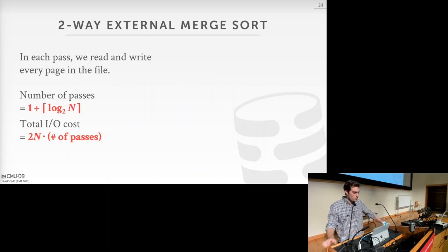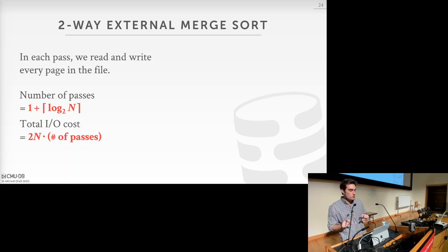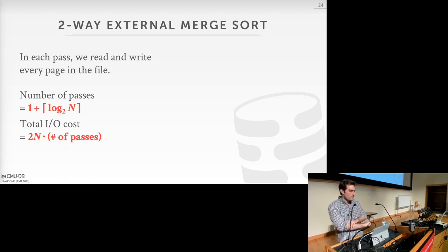In each pass we read and write every page in the file. The total number of passes is ceil(log₂ N) + 1, where the +1 accounts for the initial pass zero that sorts each page individually. The total I/O cost is 2N times the number of passes, since we read and write all pages on every pass.